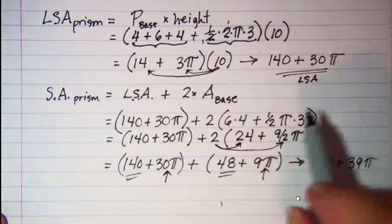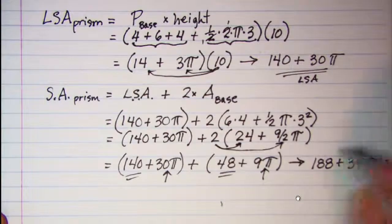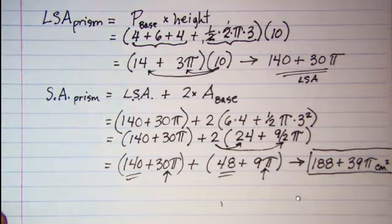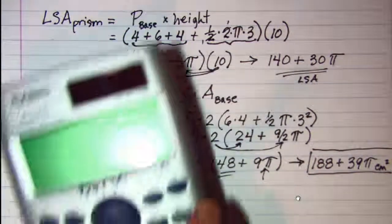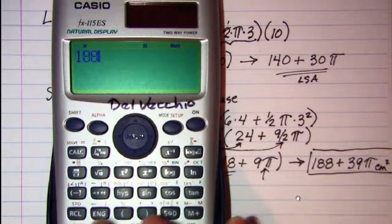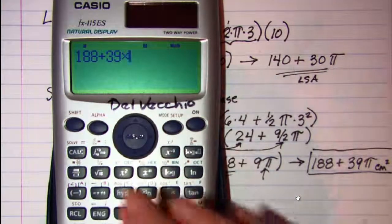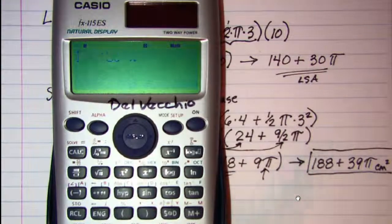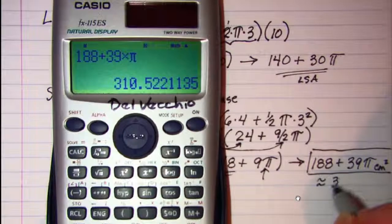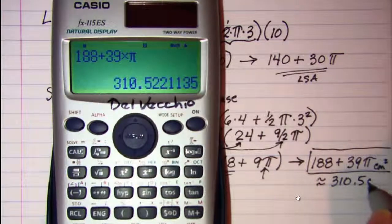My unit of measure was centimeters and this is area so centimeters squared. Now this answer is accurate. Let me go ahead and get an approximation. 188 + 39 times π equals approximately 310.5 square centimeters.